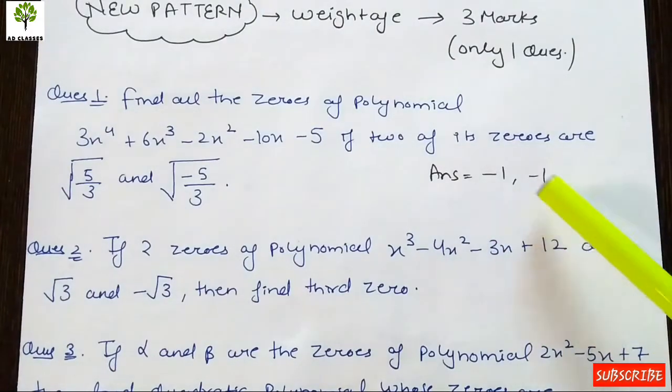The answer is -1 and -1. The other two zeros are equal to -1 and -1.